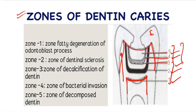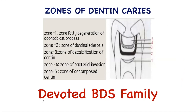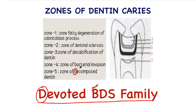How do you remember the sequence of these zones? To remember the sequence of these zones of dentine caries, just remember this line: 'devoted BDS family.' D means zone of decomposed dentine, B means zone of bacterial invasion, D means zone of decalcification of dentine, S means zone of dentinal sclerosis, and F means zone of fatty degeneration of odontoblastic process.